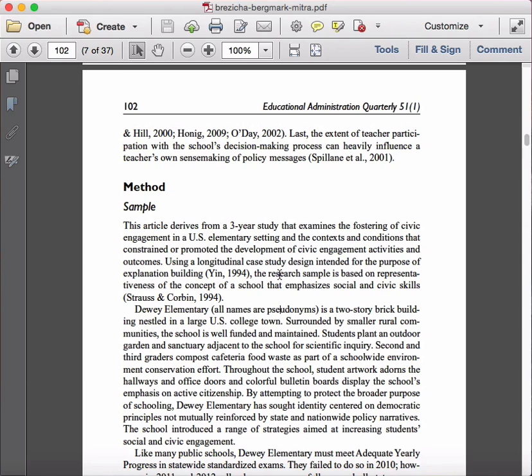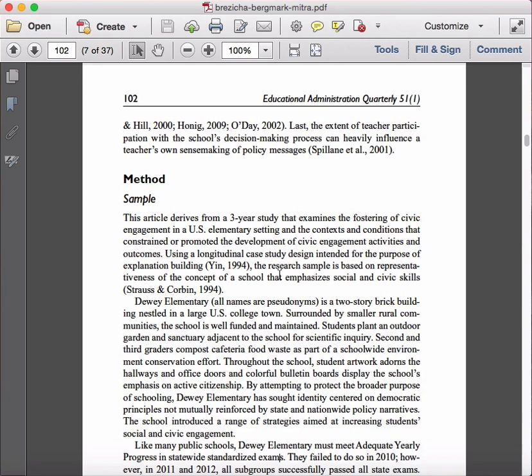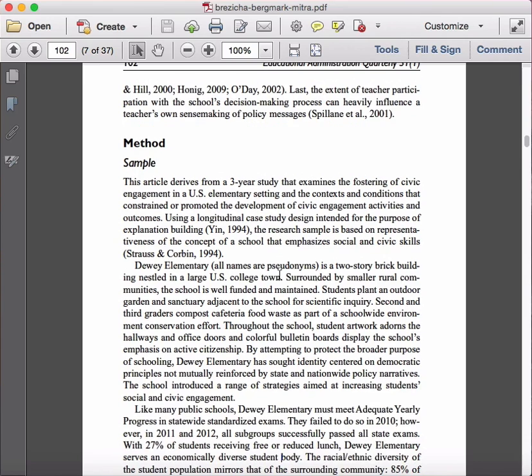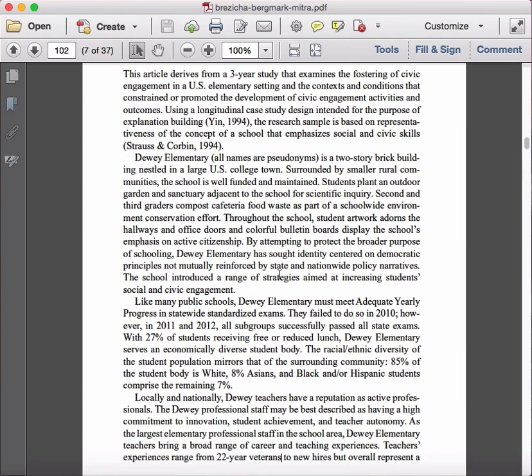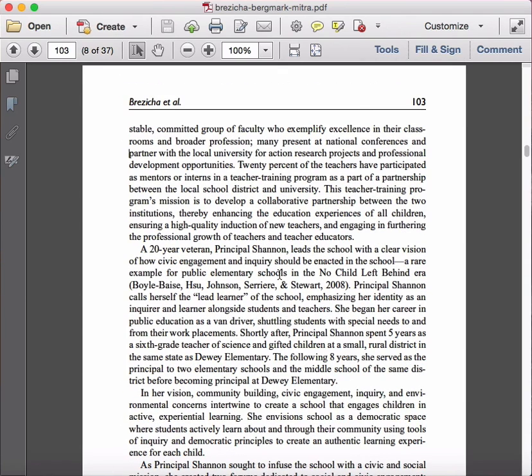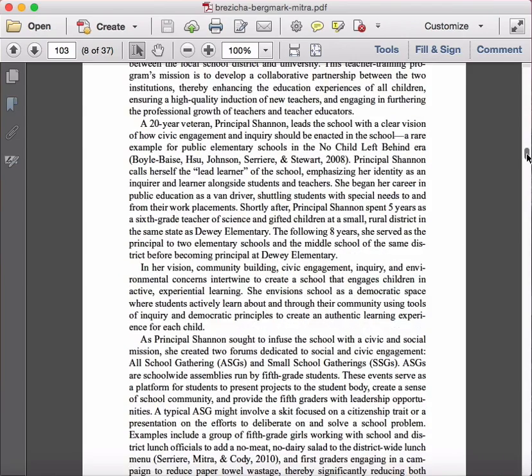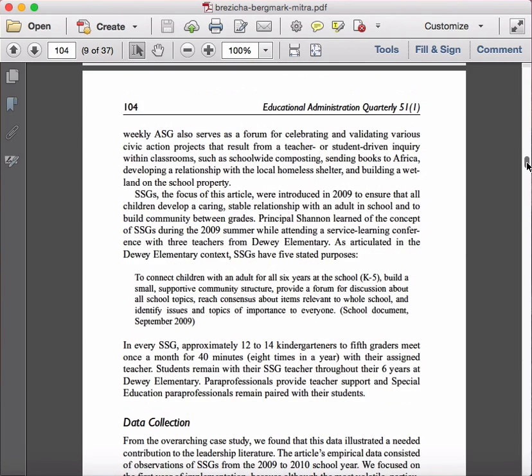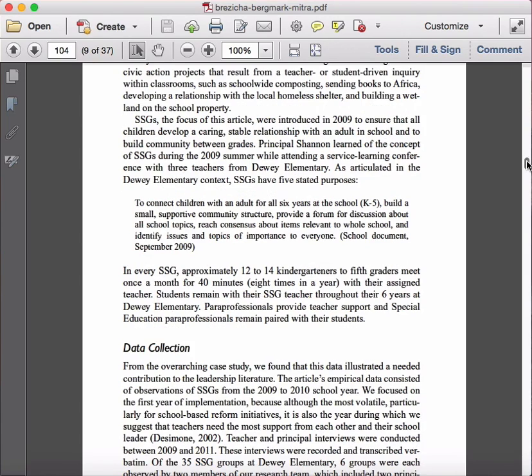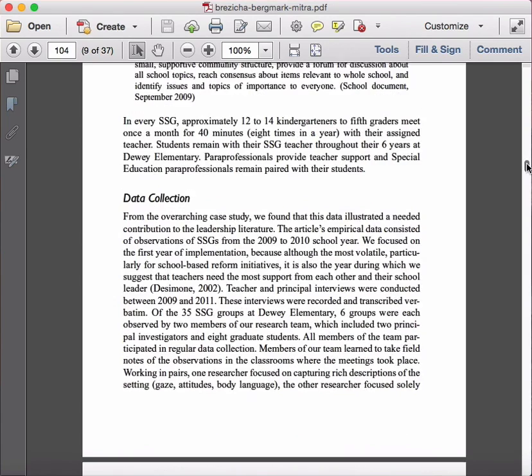Now, they don't tell us the sampling procedure you'll note. We don't know if this was a convenient sample or a purposeful sample. This was basically a school that they chose and the teachers and leaders in that particular school and they go through and describe the school and the different people involved in the school in a fair amount of detail here, but at no point do I see anywhere where they basically say that this was a purposeful sample. It was a convenient sample. It was just a random sample. Did they just pick this school at a random? There's nothing in the methodology section that tells us this.